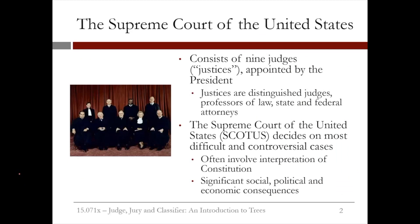The Supreme Court of the United States consists of nine judges, or justices, who are appointed by the president. This image shows the nine Supreme Court justices from the time period 1994 through 2005, which was the longest period of time with the same set of justices in over 180 years. The people appointed as Supreme Court justices are usually distinguished judges, professors of law, or state or federal attorneys.